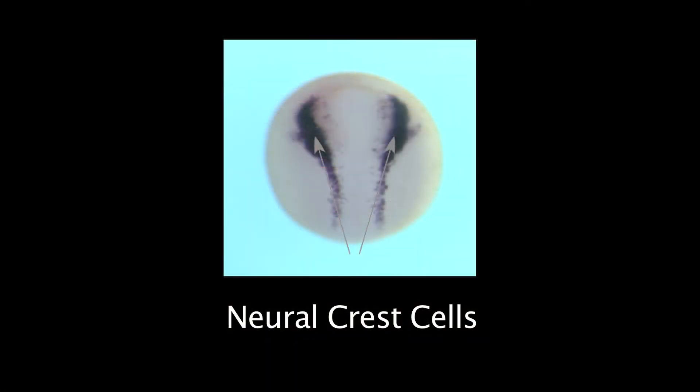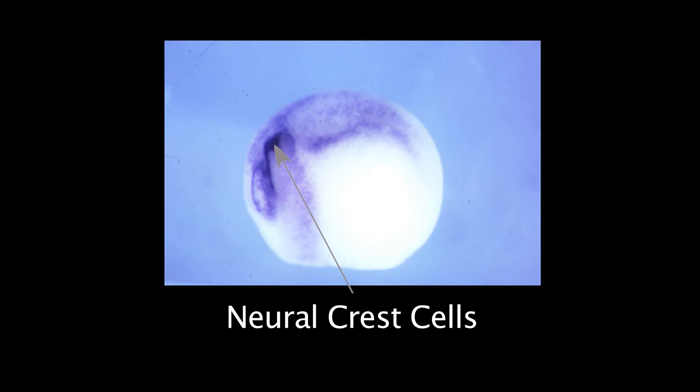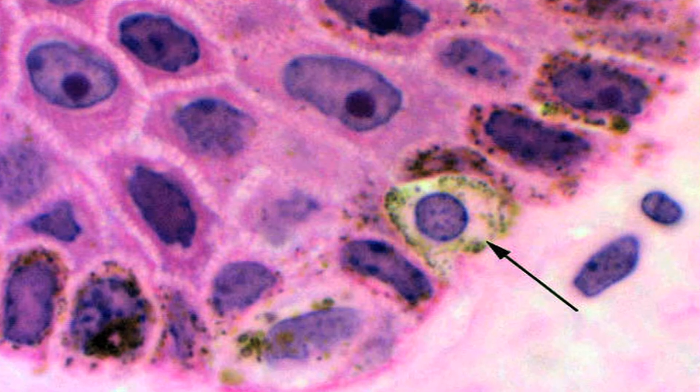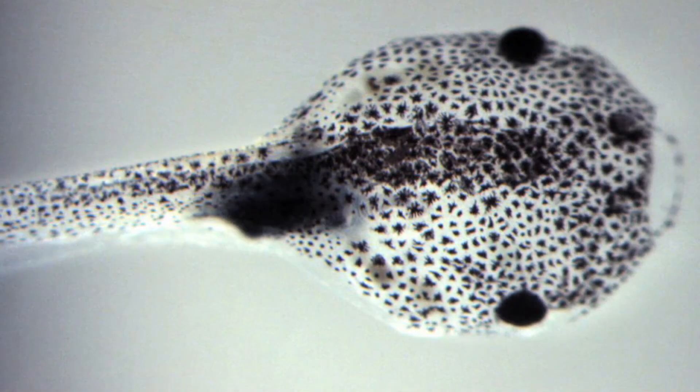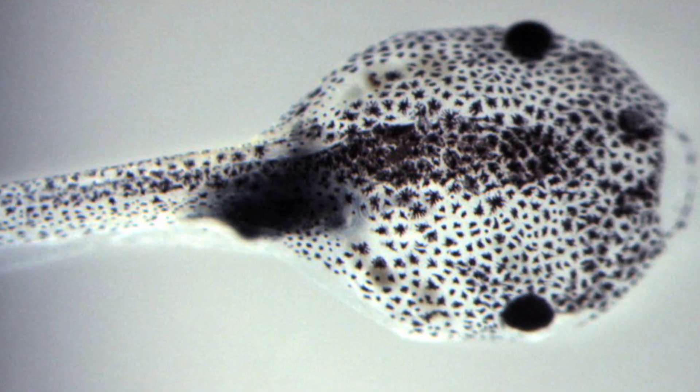In my lab, we've been interested in a particular cell type called the neural crest. The neural crest are very interesting — they are an embryonic cell type which give rise to many different tissues in our bodies, such as our facial muscle and cartilage, parts of our peripheral nervous system, and also the pigment cells in our skin. The pigment cells in our skin are called melanocytes and these derive from the neural crest cells. Pigment cells in a tadpole are very easy to see — you can see that clearly on this screen here, which is a Xenopus tadpole, and you can clearly see the black cells here are the pigment cells. So we can look at these very easily down the microscope.